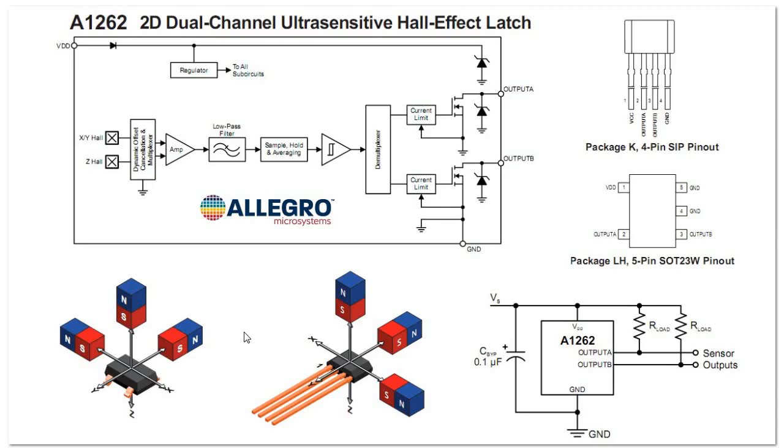We're going to look at another Allegro Hall sensor. It's the A1262. It's a 2D dual channel ultra sensitive Hall effect latch. This makes it different in that we have two Hall sensors in the same TO-92 package. This is a four wire device as opposed to a three wire. It has an X, Y, and Z axis. One Hall plate would be vertical and the other one would be horizontal to the face of the device.